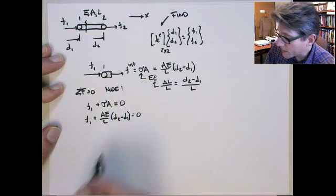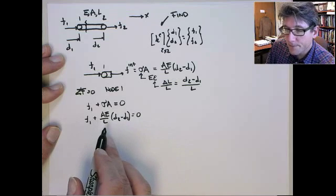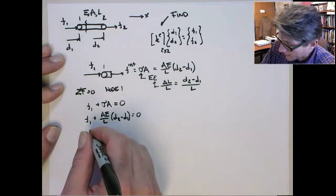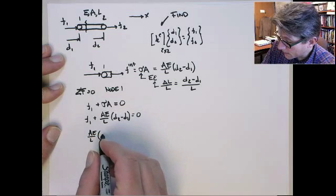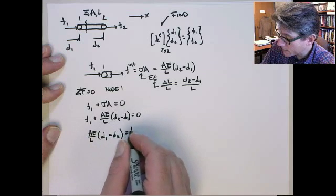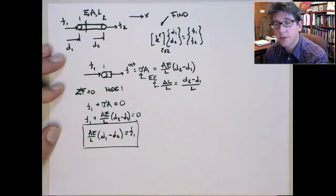And now we can just do some manipulation. We'll move F1 to the right-hand side, and then multiply by minus 1, so F1 stays positive. And we get EA on L, D1 minus D2 is equal to F1. So that's the force balance on the first node.